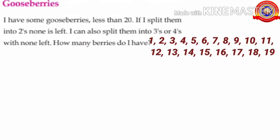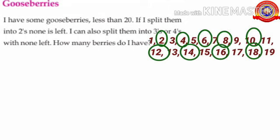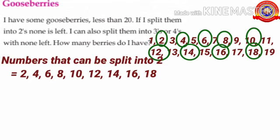Children, from these numbers, which are the multiples of 2? That means, which are the numbers that come in the multiplication table of 2? Yes, 2, 4, 6, 8, 10, 12, 14, 16 and 18. So children, numbers that can be split into 2 equals 2, 4, 6, 8, 10, 12, 14, 16 and 18.